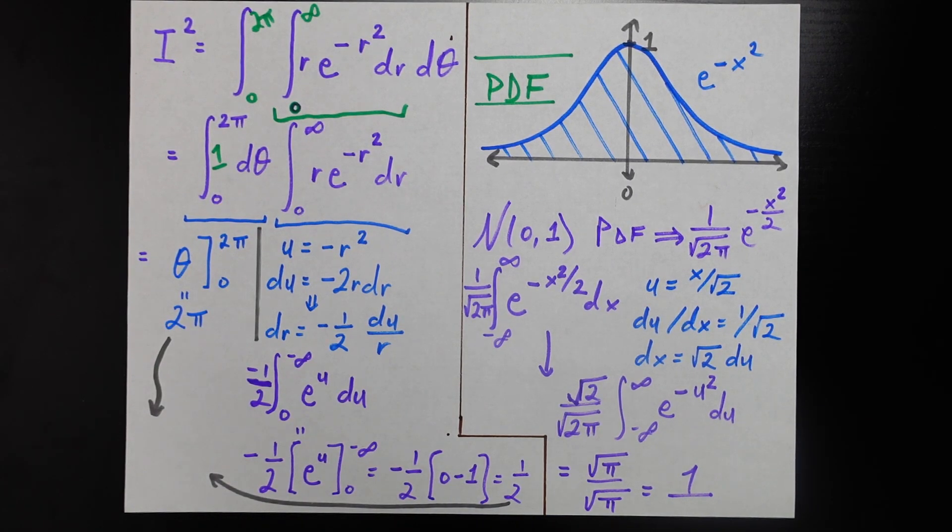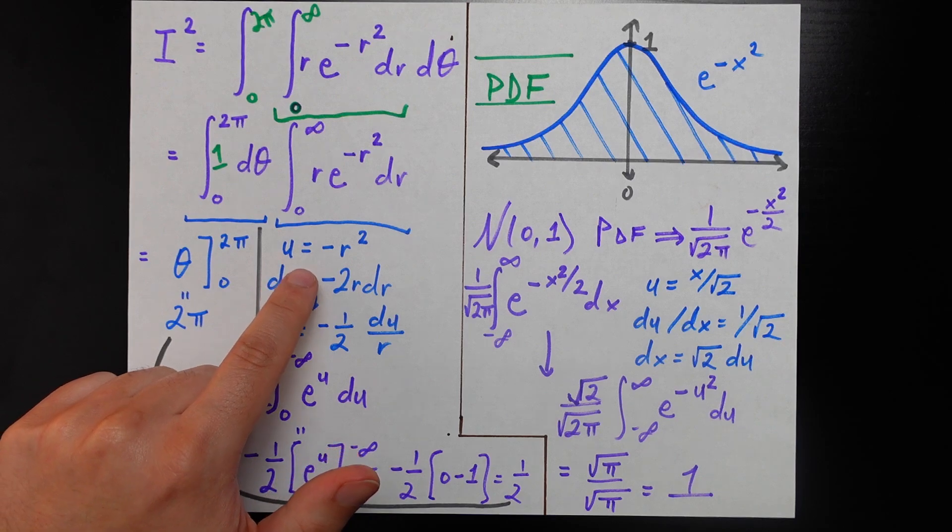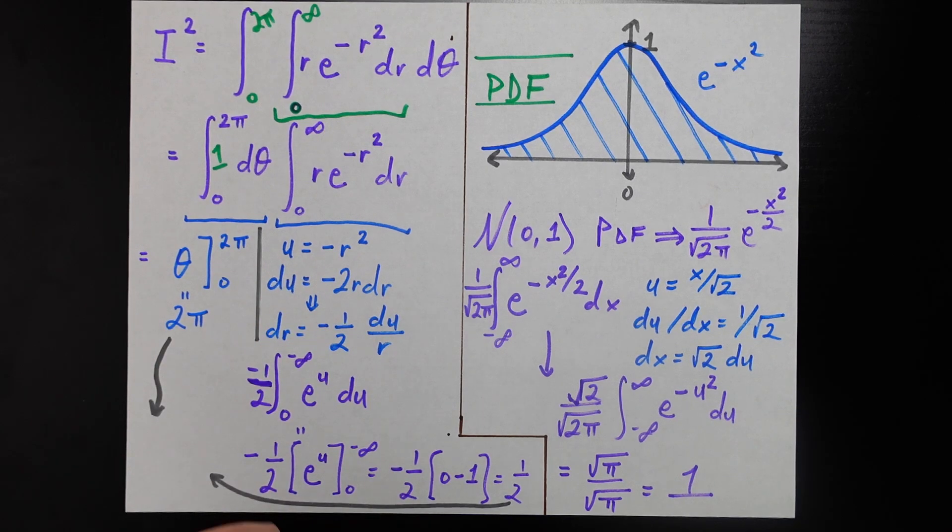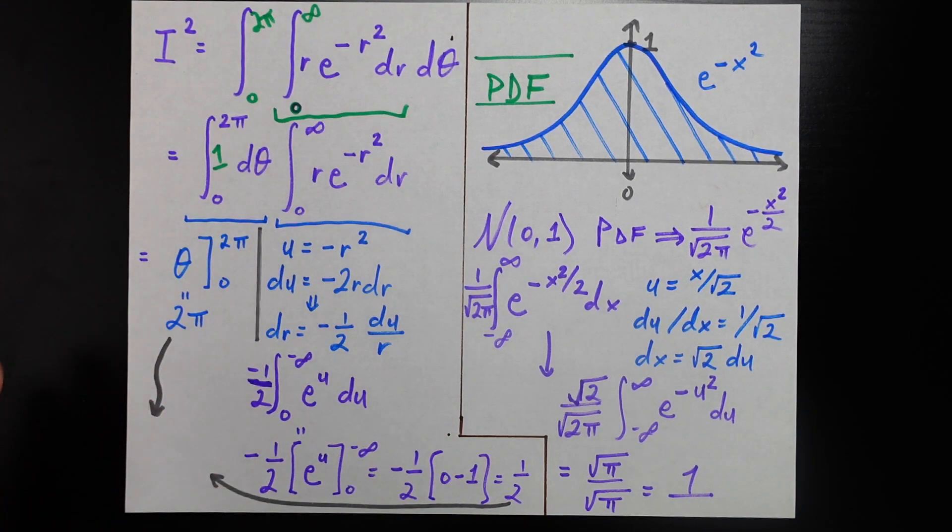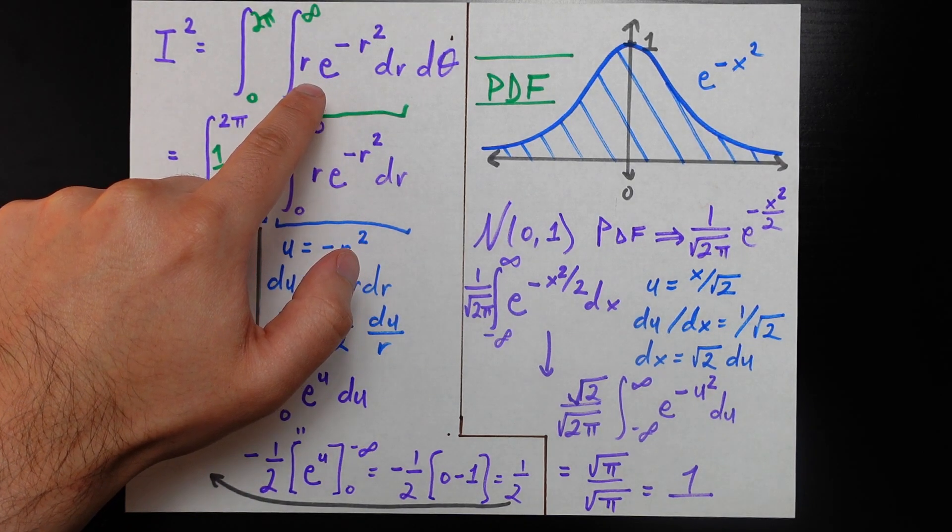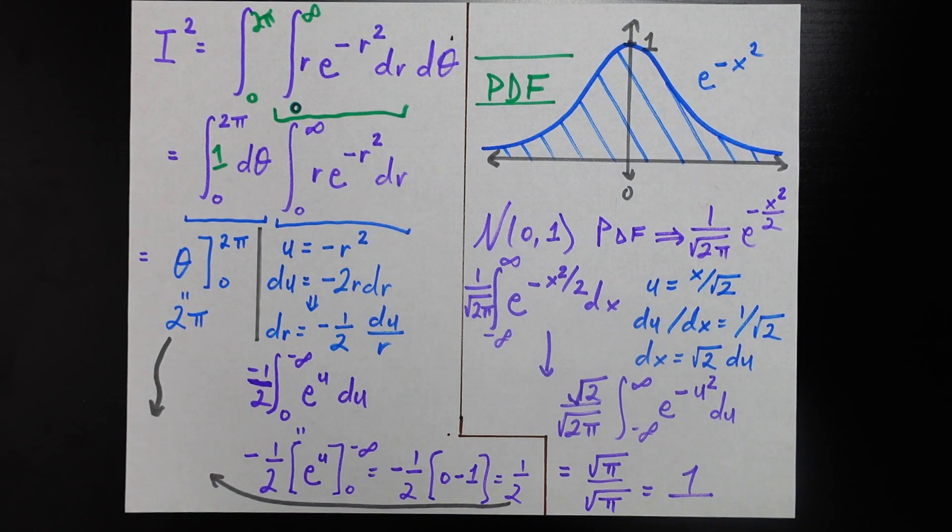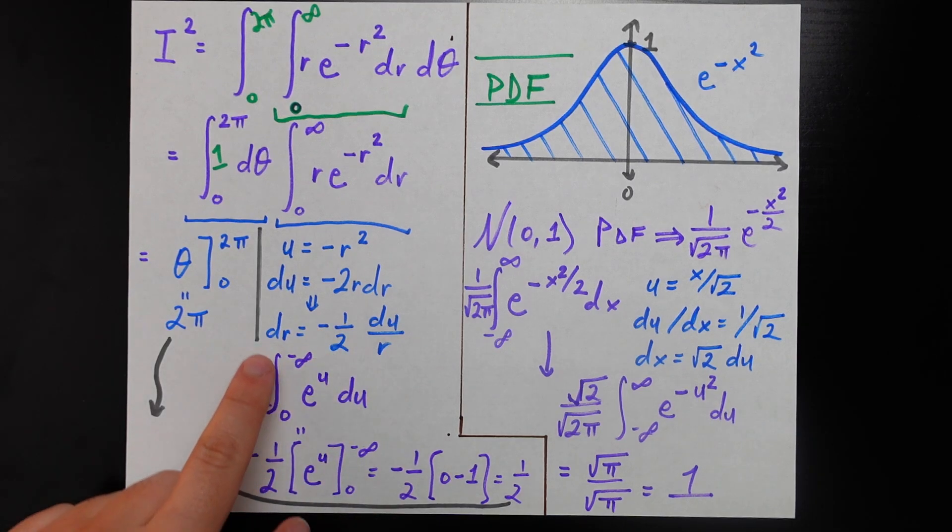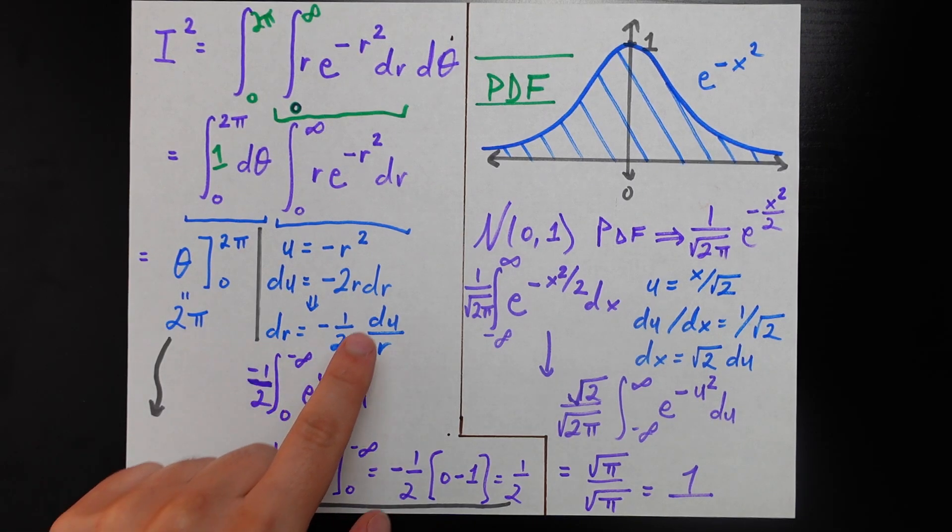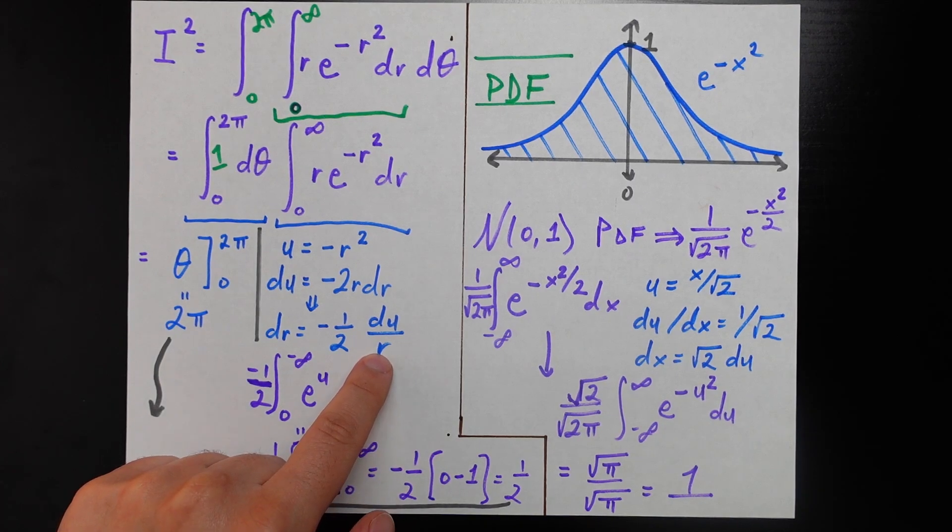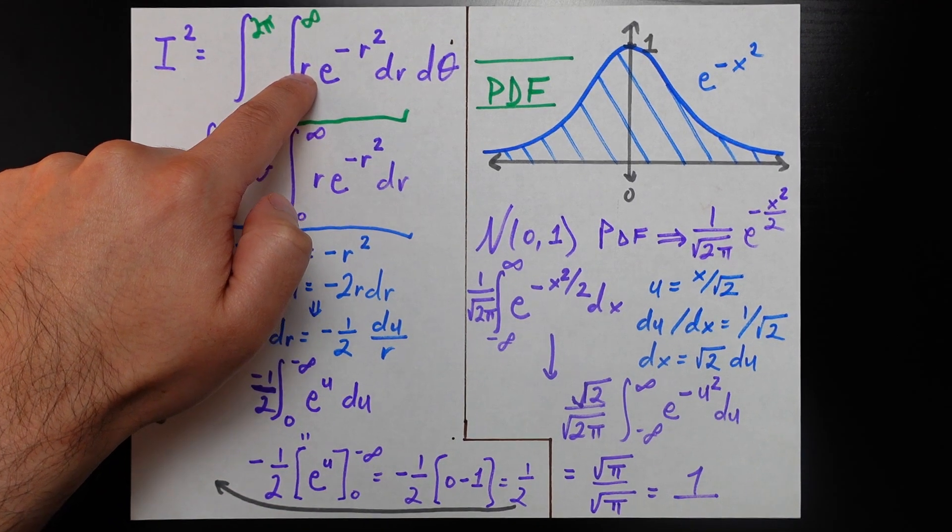The second one takes a little more work, but the failed u substitution we did before is actually going to work now. We're going to say u is equal to negative r squared. That means du is equal to negative 2r dr. Rearranging, dr is equal to negative one-half times du over r. That all works out for us. Doing all the substitutions, we plug in e to the u, and dr is negative one-half times du divided by r.